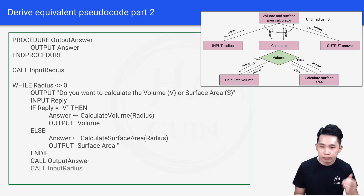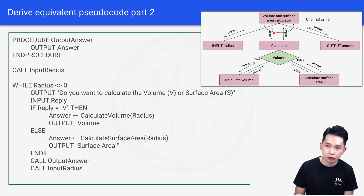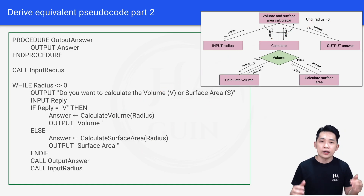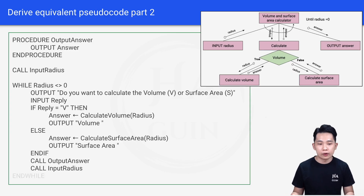Then we call inputRadius again, because this is a loop — we only stop when radius equals zero as input. Finally, ENDWHILE.